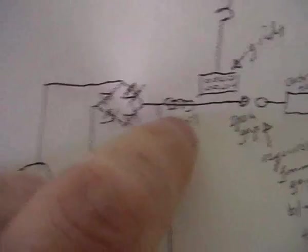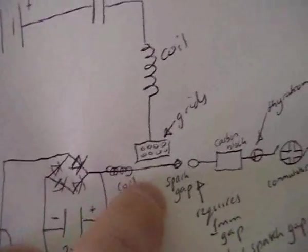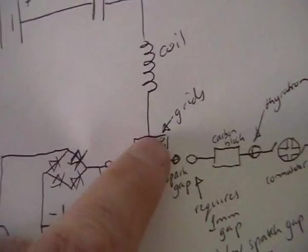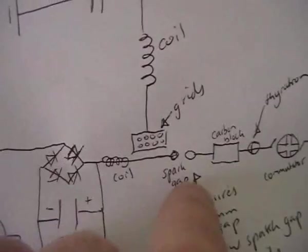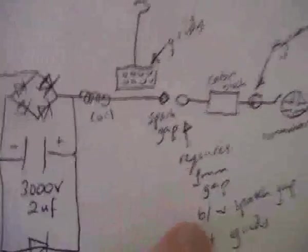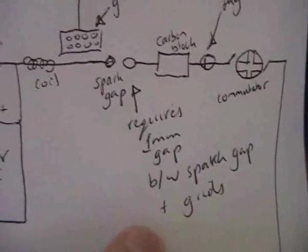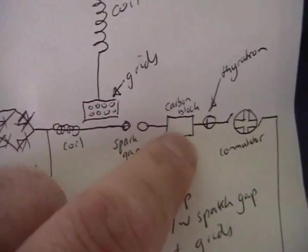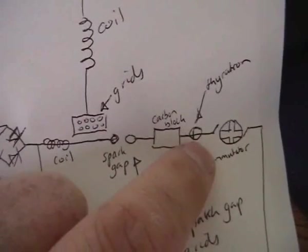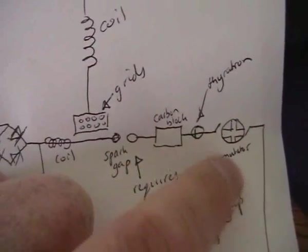Okay, I've added another coil here, going to the spark gap, there's the grids, and I've got, oh yeah, the spark gap requires about a 1mm gap between the spark gap and the grids. Which then I've got a carbon block, there's a carbon block, there's my thyrotron, and a commutator, and then it goes back to the positive of the primary battery.